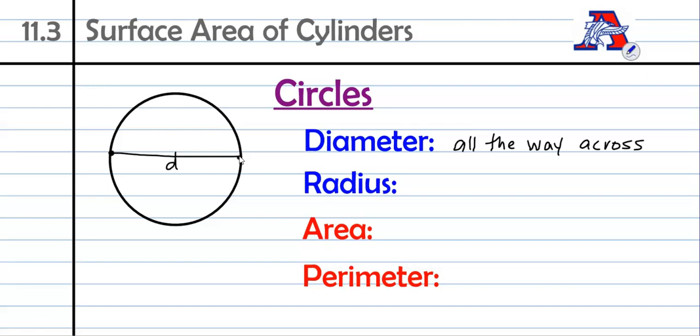And then there's the radius. I'm just going to draw it the other direction here so it doesn't get in the way of our diameter that's already there. The radius is the distance from the center to the outside, or half of the diameter. So radius is equal to half of your diameter.